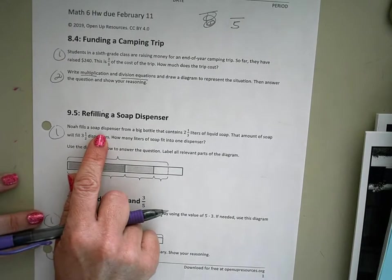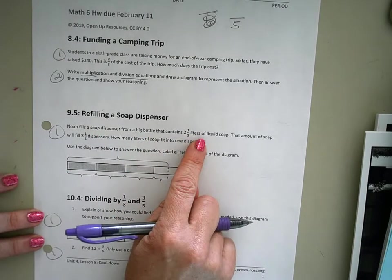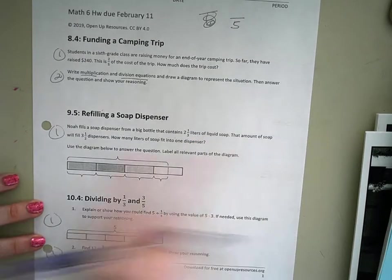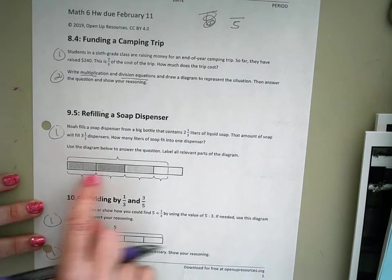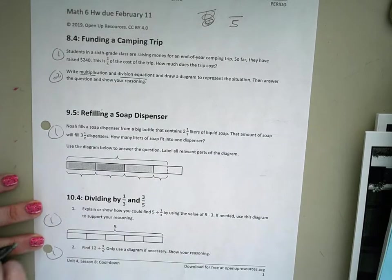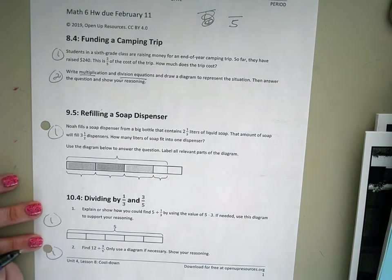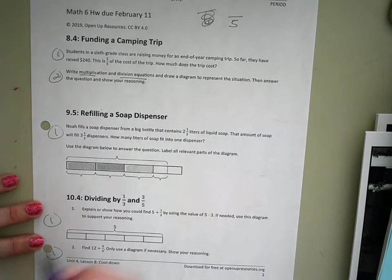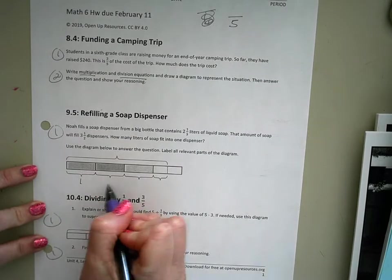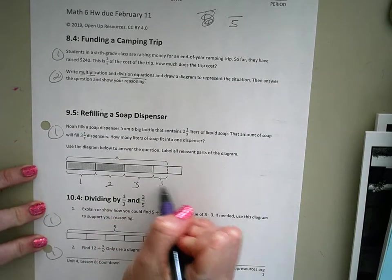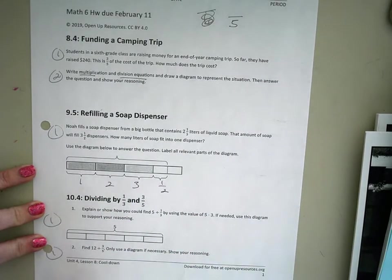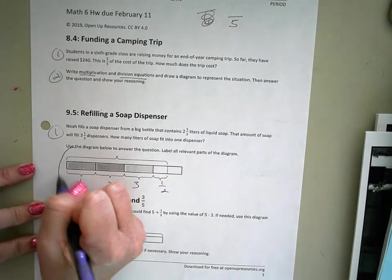So Noah fills a soap dispenser from a big bottle that contains two and a third liters of liquid. The amount of soap fills three and a half dispensers. How many liters of soap will fit into one dispenser? So right now we have one, two, three and a half dispensers. So the answer we're trying to find is right here.